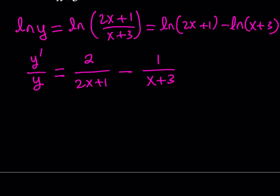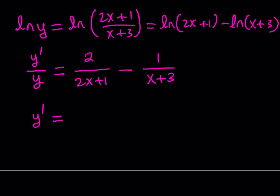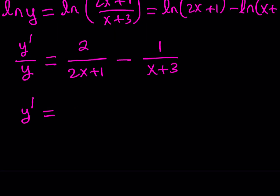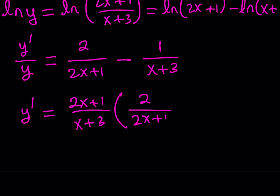We're pretty much done. The only thing we have to do is multiply both sides by y, which is 2x plus 1 divided by x plus 3. So we write that first, and then multiply by the whole quantity: 2 over 2x plus 1 minus 1 over x plus 3. Obviously you can make a common denominator and simplify further. By using the natural logarithm, we can differentiate these kinds of rational functions, and this method works for more complicated expressions too.